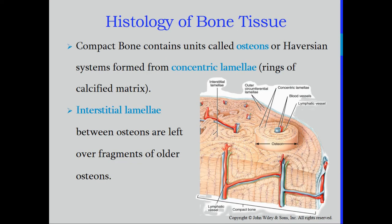Compact bone contains units called osteons, sometimes referred to as the Haversian system, formed by concentric lamellae — rings of calcified matrix. Looking at this diagram, we can identify multiple osteons in the compact bone. Each osteon has concentric rings resembling tree rings, and in the central canal you will find the blood vessels and nerves running through that canal system.